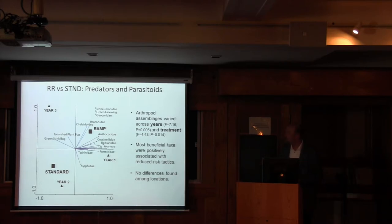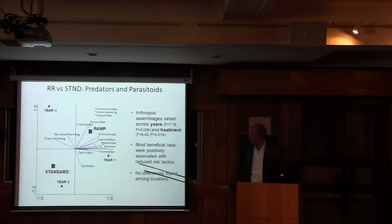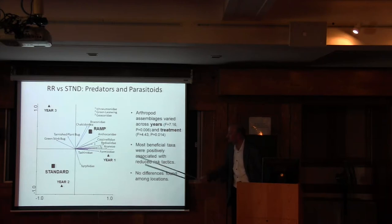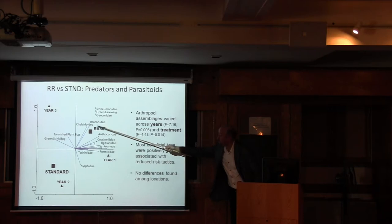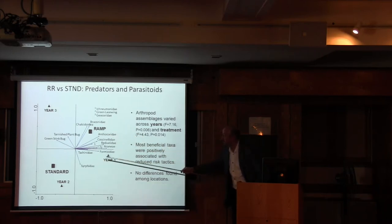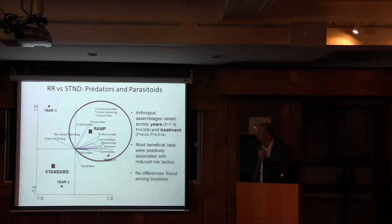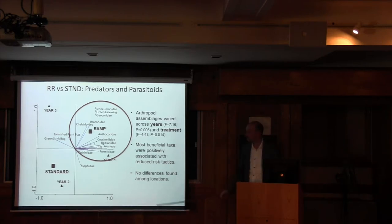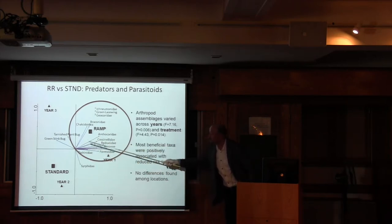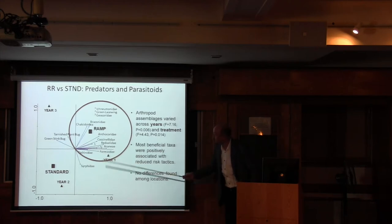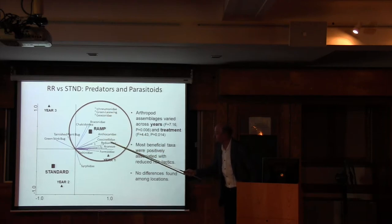Did this translate into more beneficial arthropods? We got different stories depending on the group. In the redundancy analysis for predators and parasitoids, the RAMP reduced-risk and standard treatments are shown as darkened squares, and all the vectors representing different beneficial groups trend strongly toward the reduced-risk plots. We found a significant effect of treatment: the vast majority of the beneficial community — braconid wasps, ichneumonid wasps, green lacewings, minute pirate bugs, ladybird beetles, assassin bugs, spiders — were found in significantly higher abundances in the reduced-risk fields.